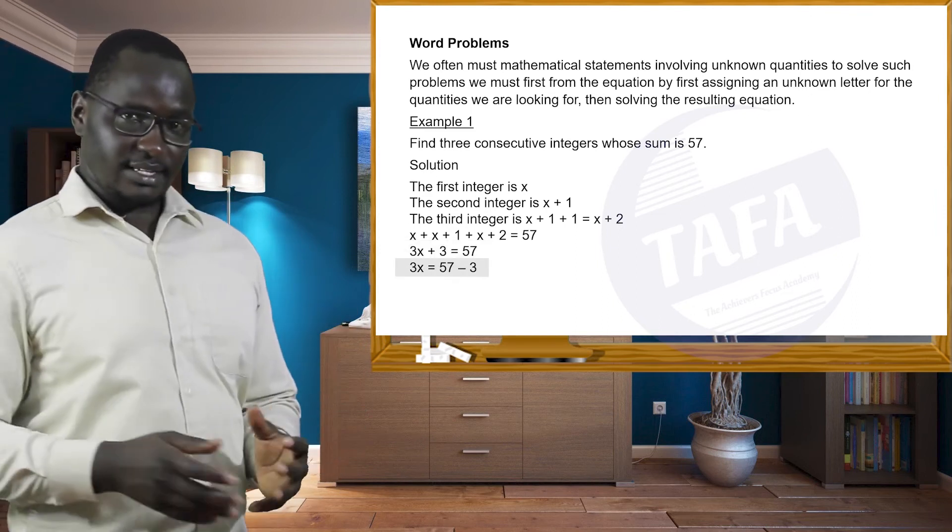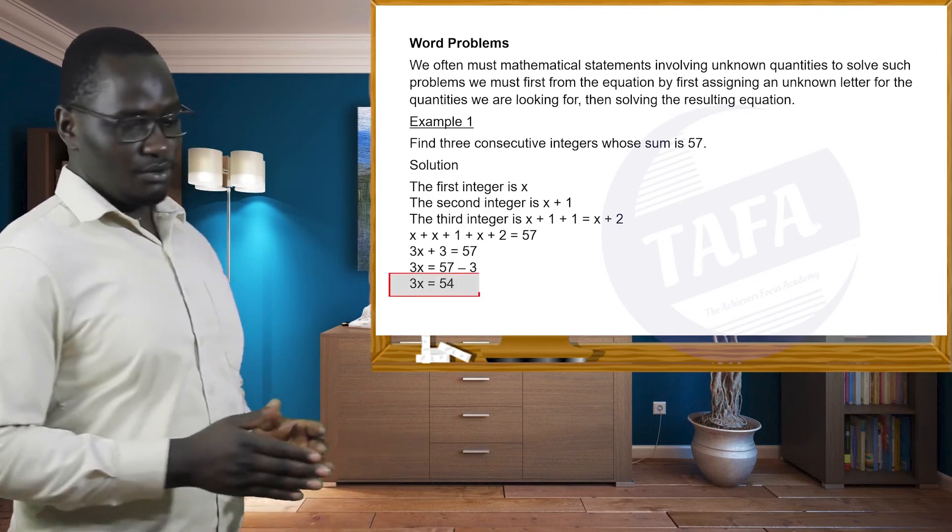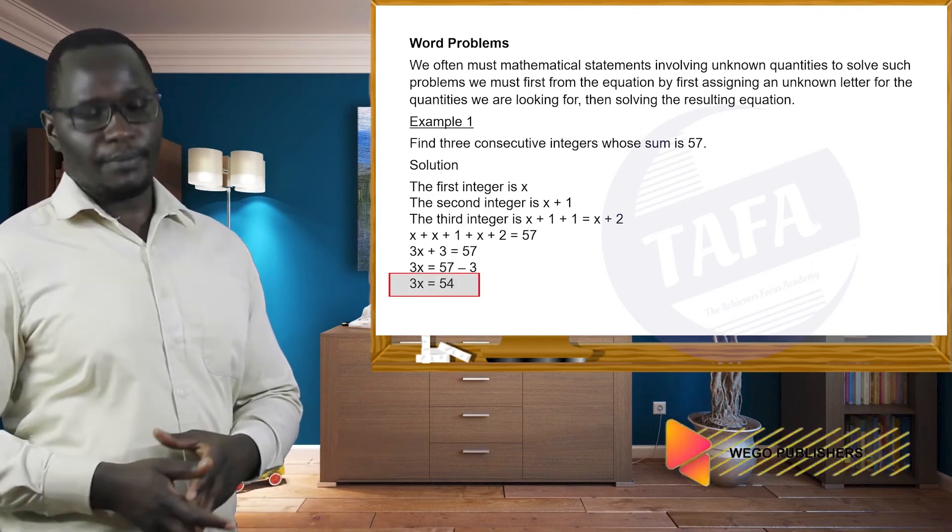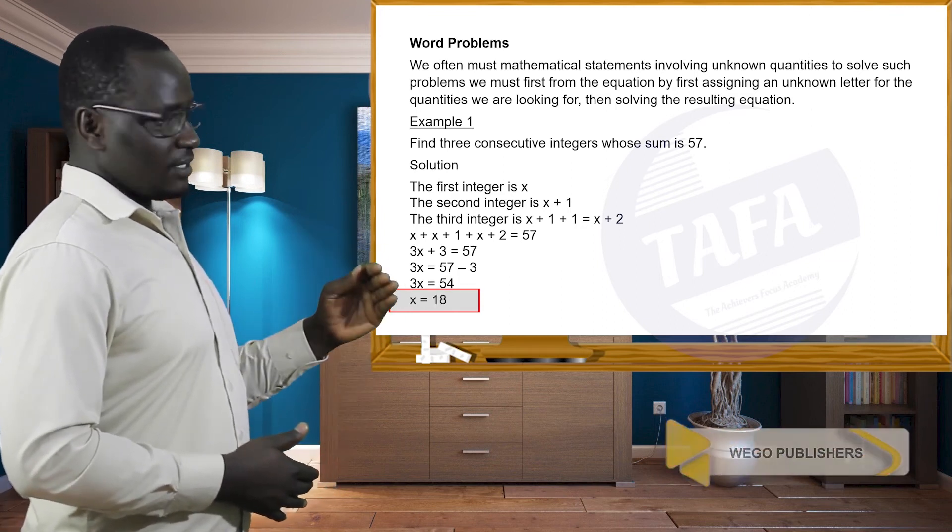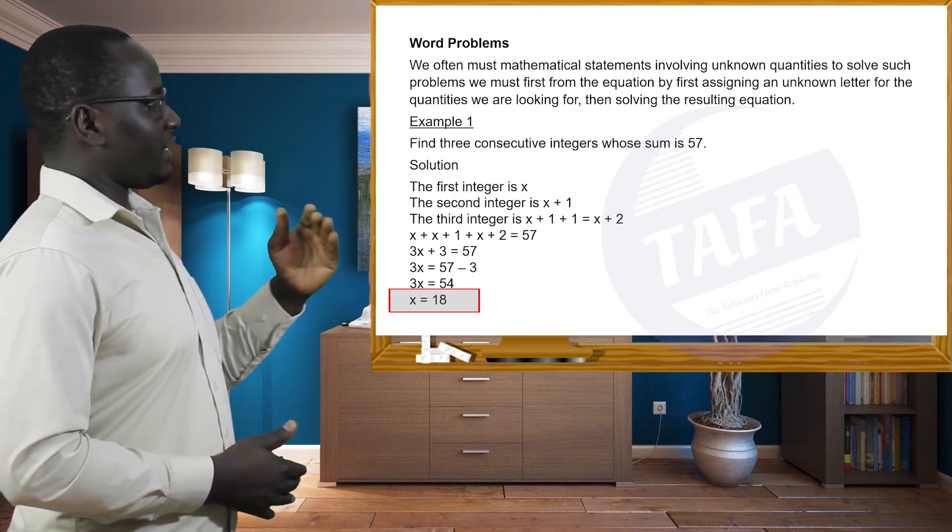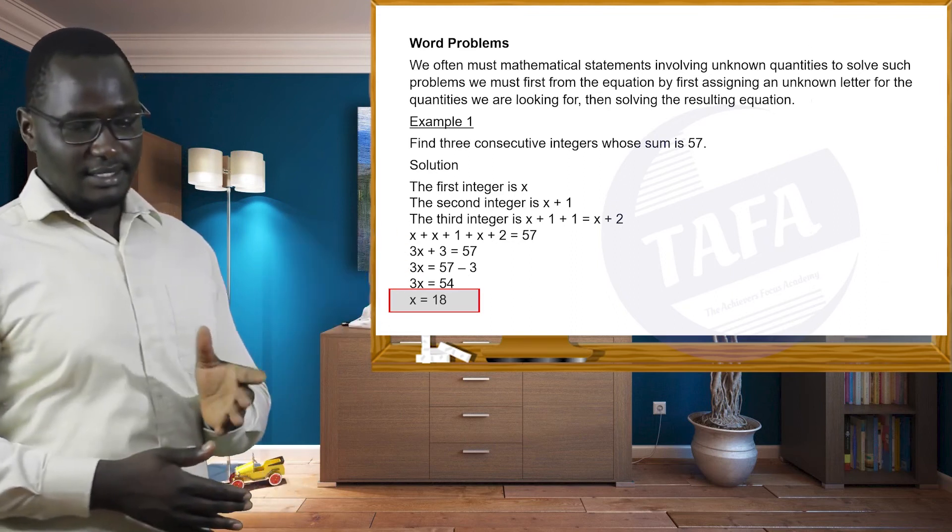Take 3 on the other side of the equation, we'll have 3x is equal to 54. We must get x. So it means that 3x, we divide all through by 3, we get x as 18.